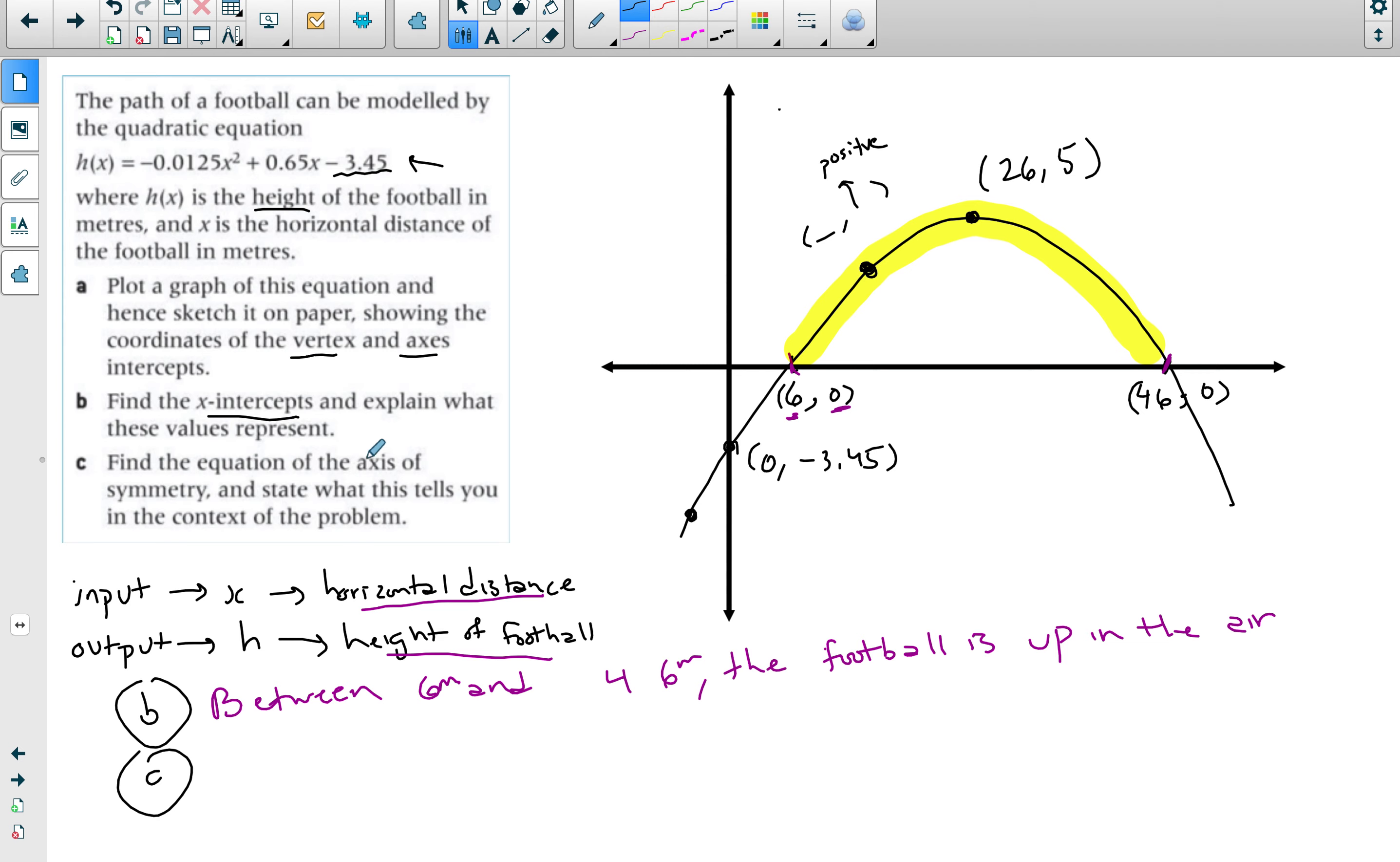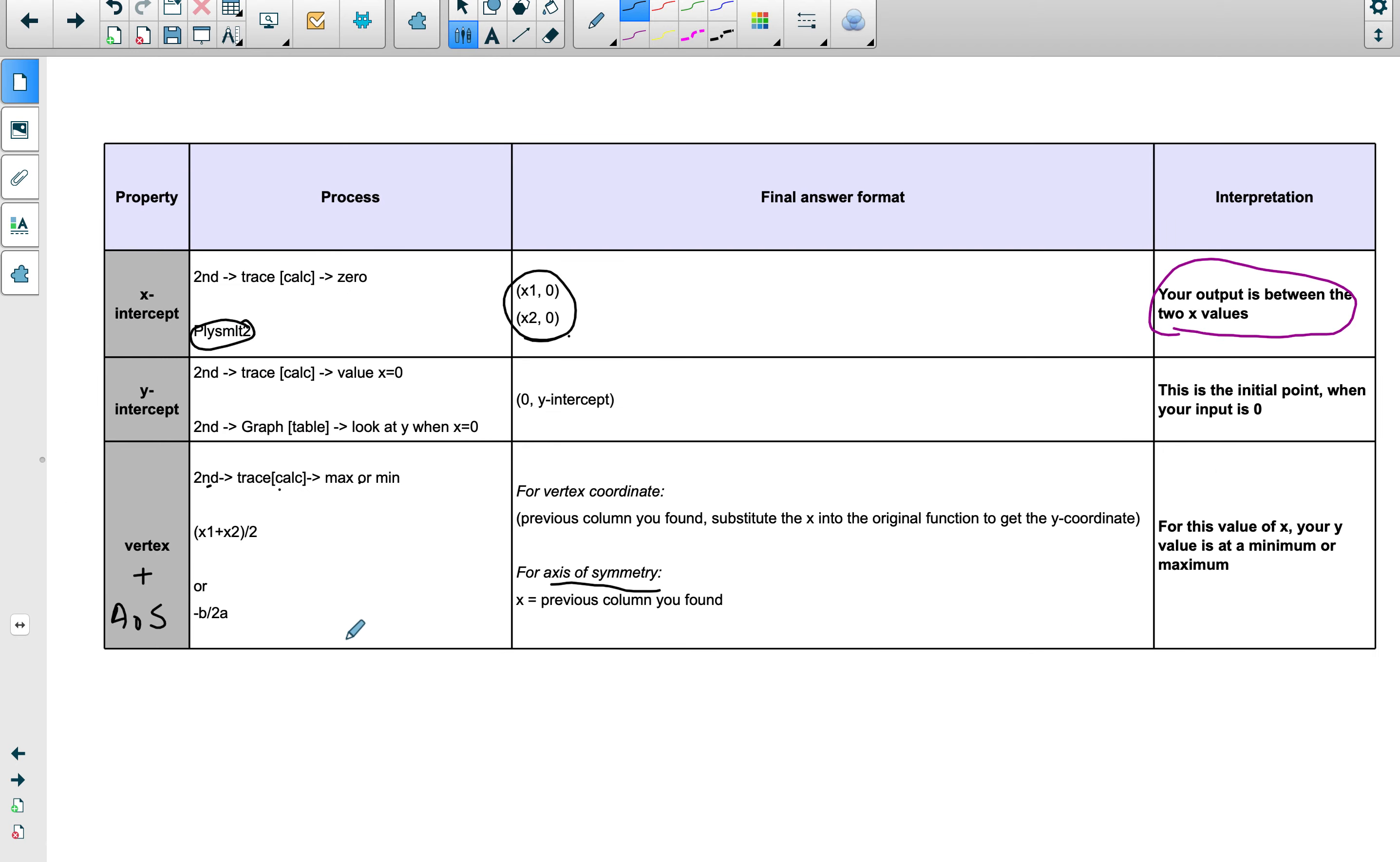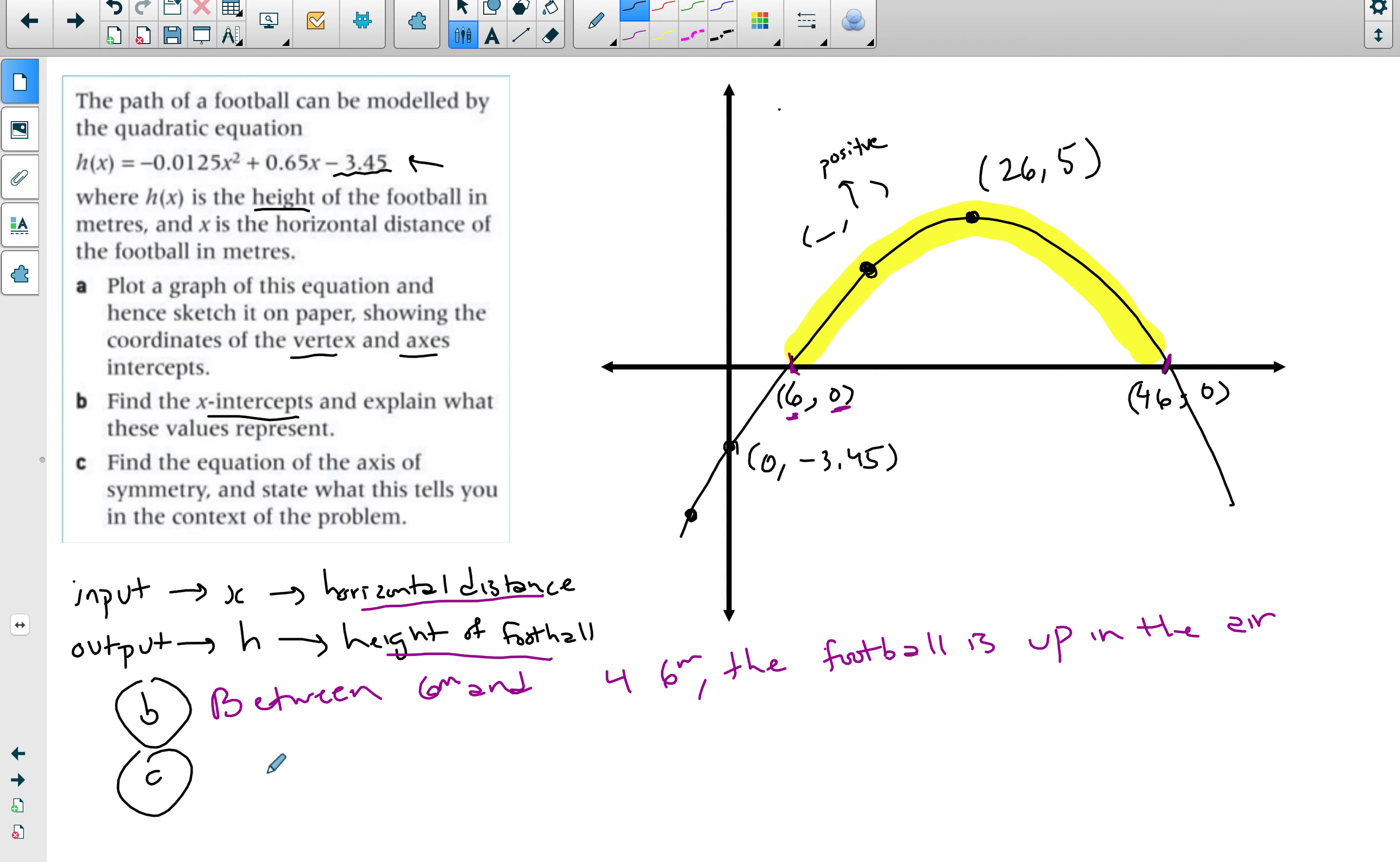Now for the last one, find the equation for the axis of symmetry and say what this tells you in the context of the problem. The axis of symmetry is the same as taking the x-coordinate of the vertex. So if the vertex is (x, y), the axis of symmetry is you taking the x value or using x1 plus x2 divided by 2. I can go 6 plus 46 divided by 2 and that should give me 26, or I could just take this 26 from the vertex. But remember your final answer has to be x equals 26 and that is my axis of symmetry here.